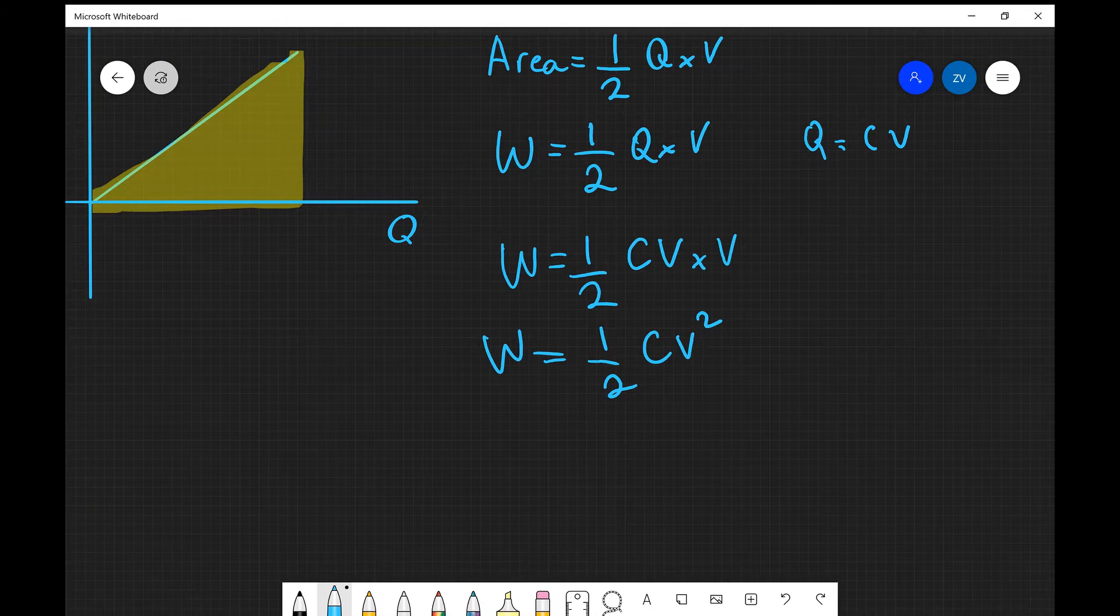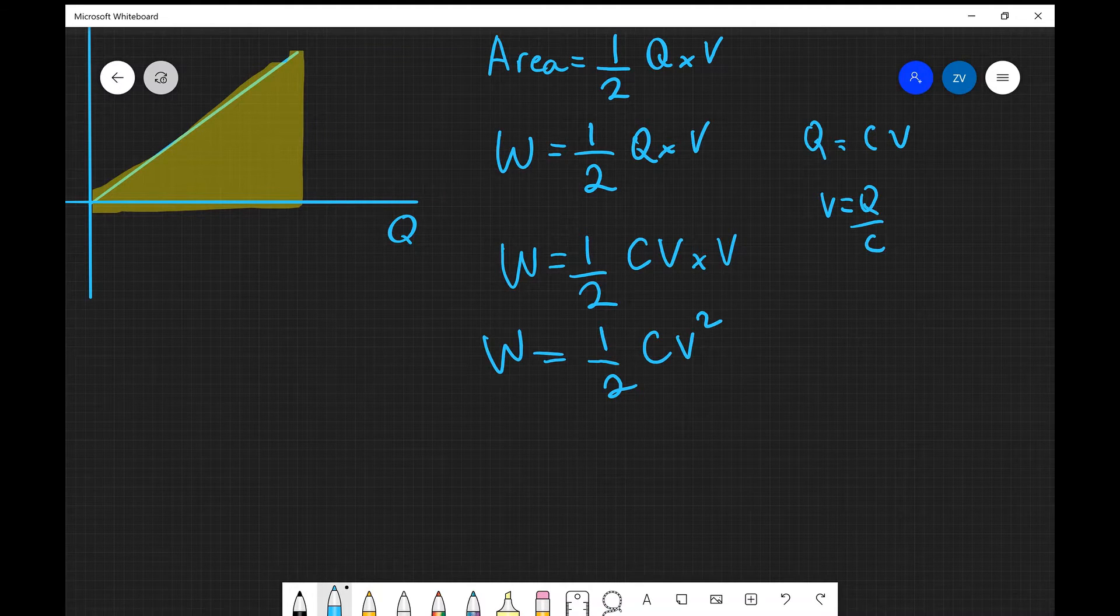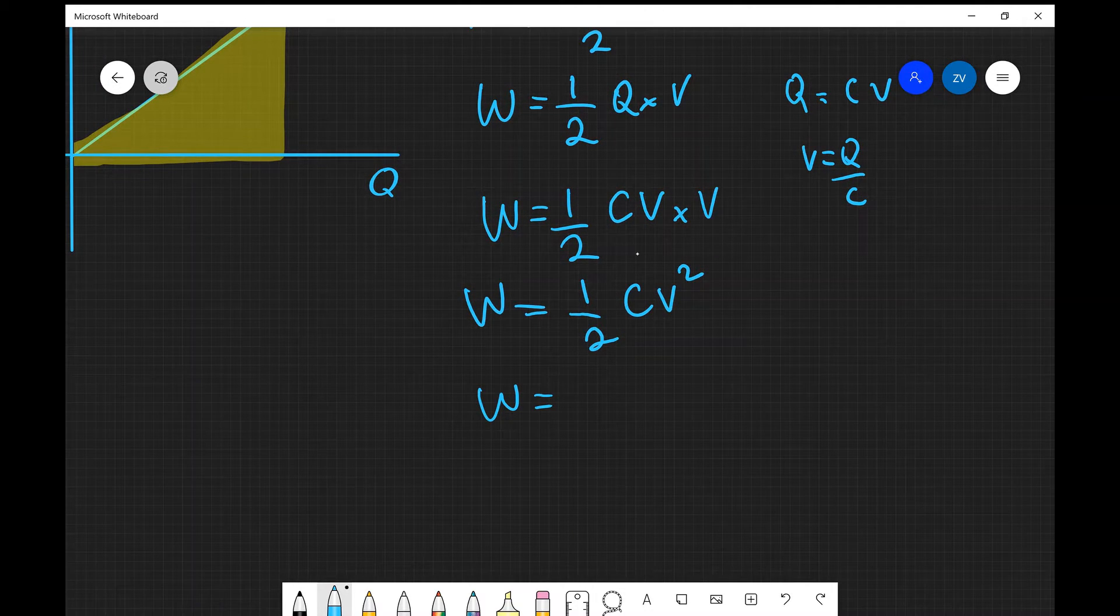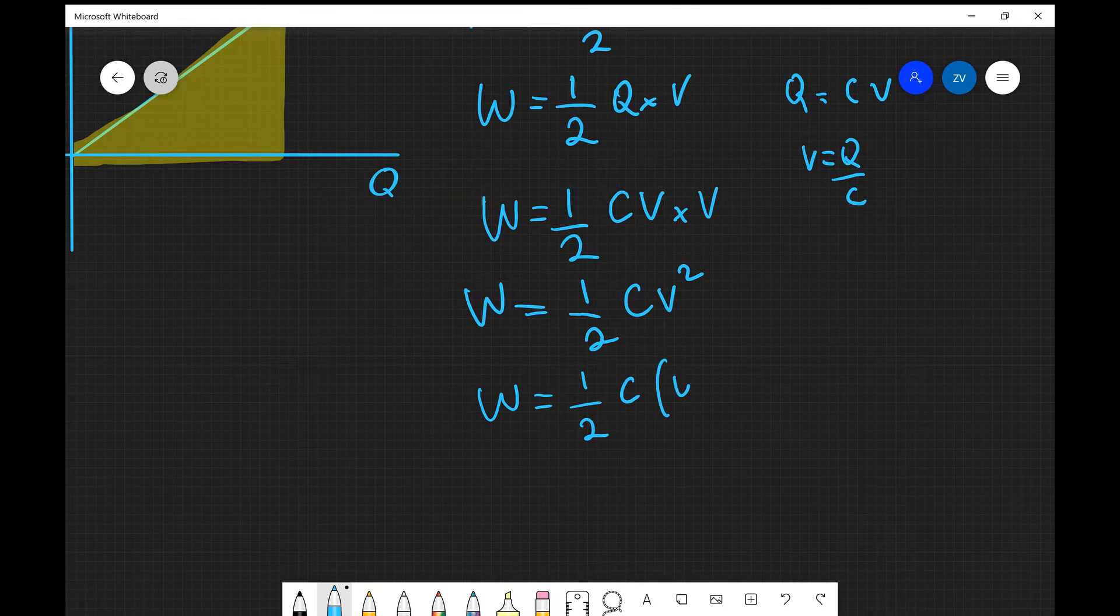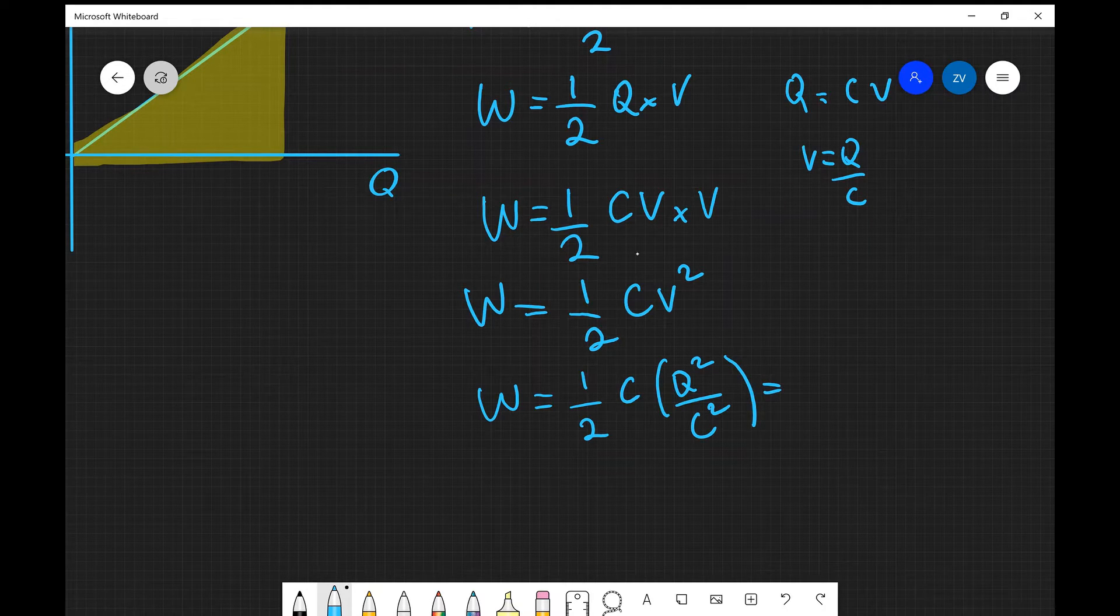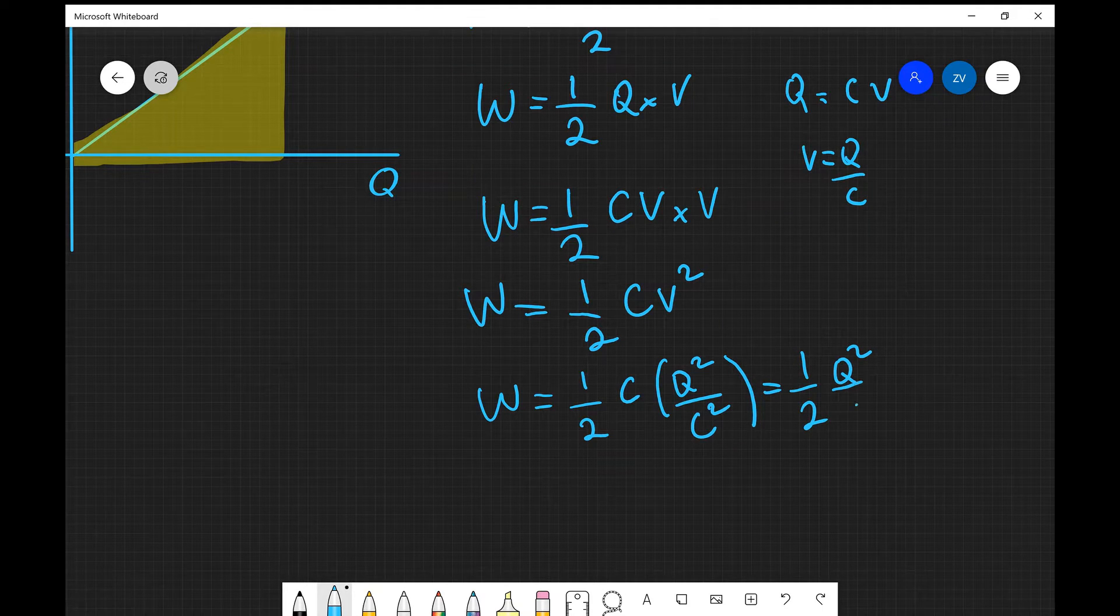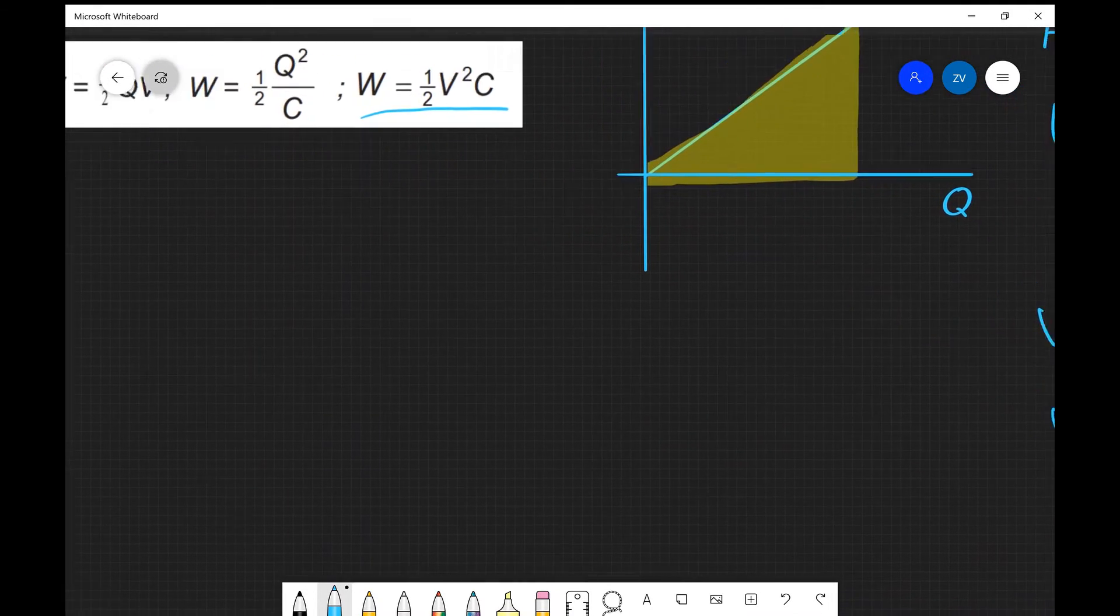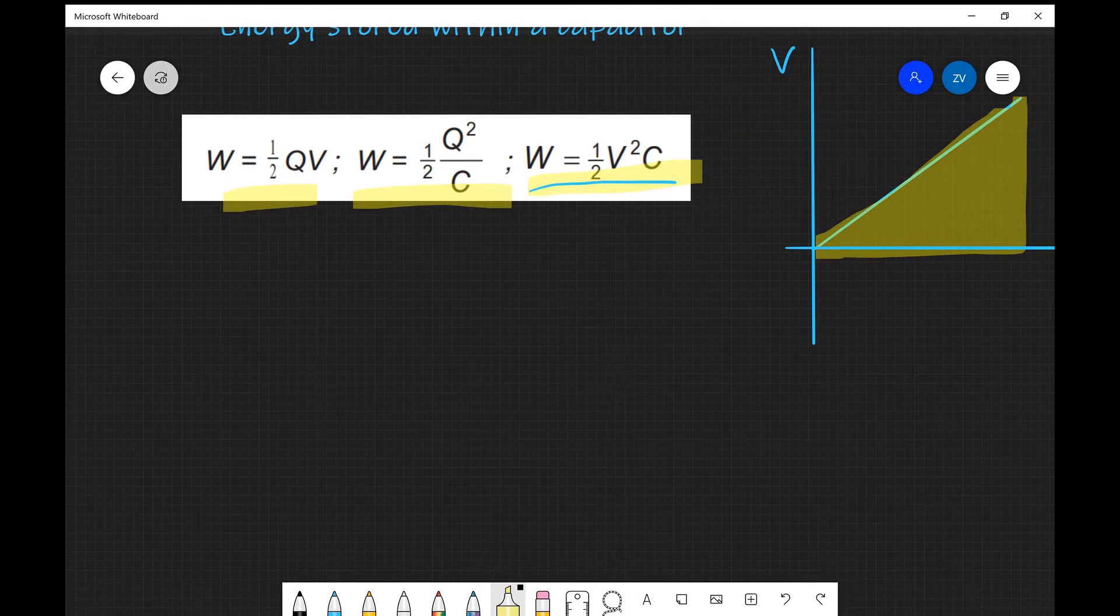And finally, because V is given by Q over C, we can expand this equation out further or simplify it even further to reach the most fundamental state of this equation. And what we're going to get is a half C and V squared, I'm going to write Q squared divided by C squared like that. There's no need for those brackets actually, so let's just leave it as a half Q squared divided by C, because those guys are going to cancel out. And this is the final equation, or the middle equation, which you guys are given in your formula sheet.